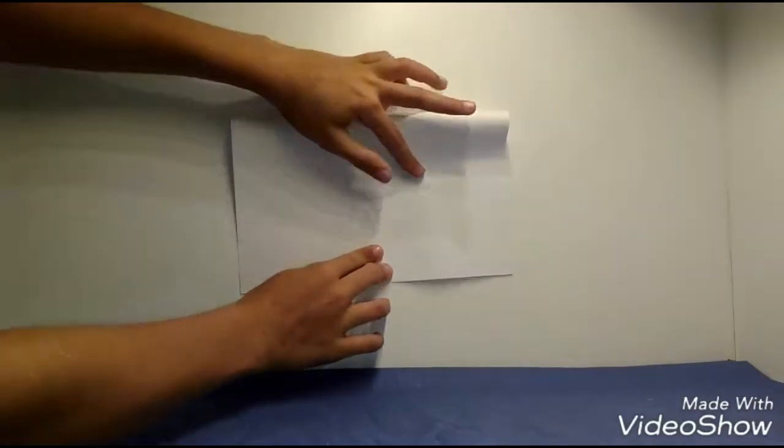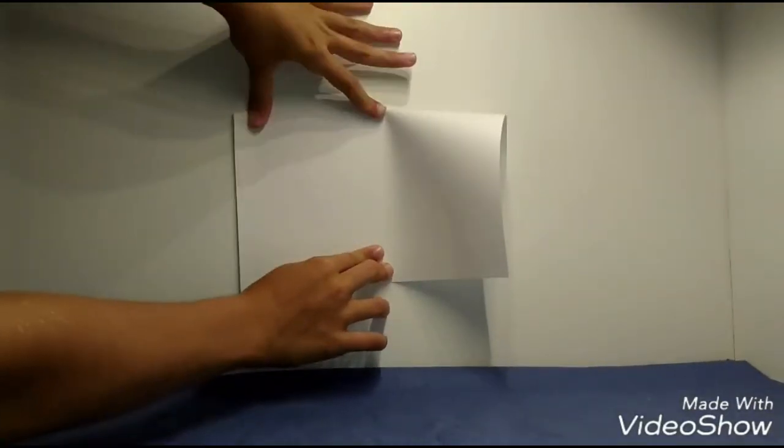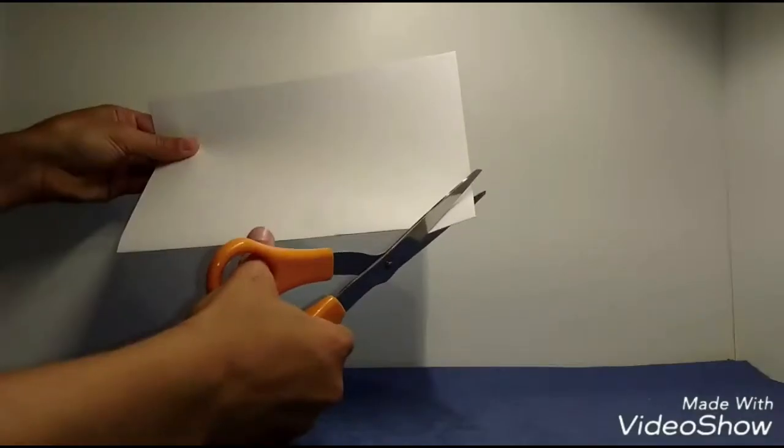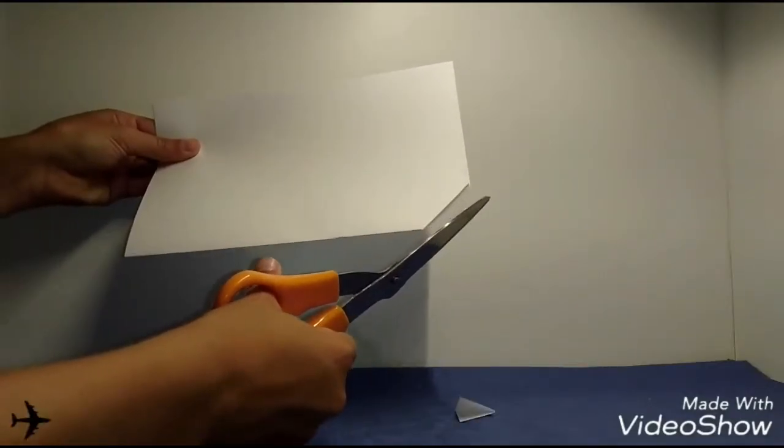Take your piece of paper. You can even just use white paper and then draw on it. But again, any color you want, don't be afraid to customize this. Trim off a little triangle on the end.